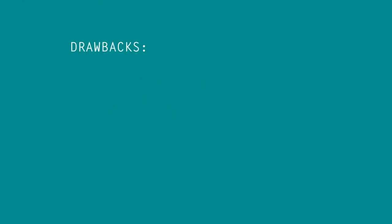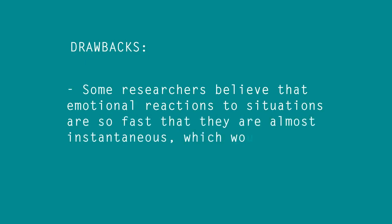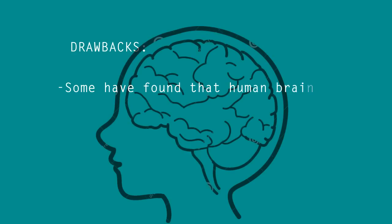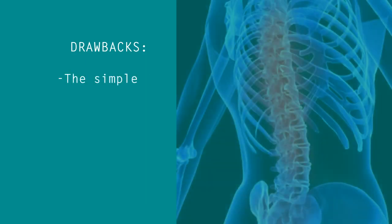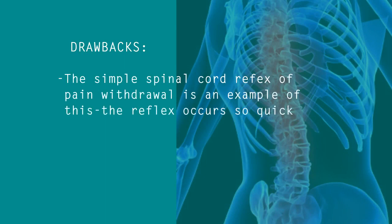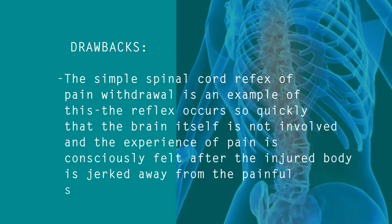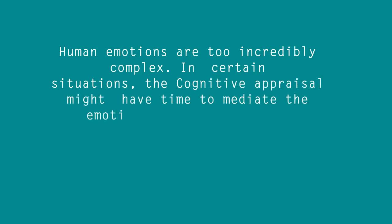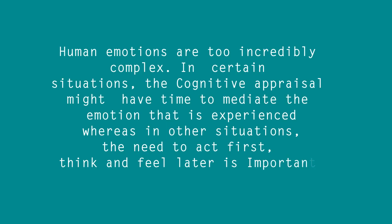Of course, there are people who don't support this theory. Some researchers believe that emotional reactions to situations are so fast they are almost instantaneous, leaving little time for cognitive appraisal to occur first. Some have found that the human brain can respond to a physical threat before conscious thought even enters the picture. The simple spinal cord reflex of pain withdrawal is an example — the reflex occurs so quickly that the brain itself is not involved, and pain is consciously felt only after the injured body is pulled away from the painful stimulus. Human emotions are incredibly complex. In certain situations, cognitive appraisal might mediate the emotion experienced, such as falling in love, whereas in other situations, the need to act first and think and feel later is important.